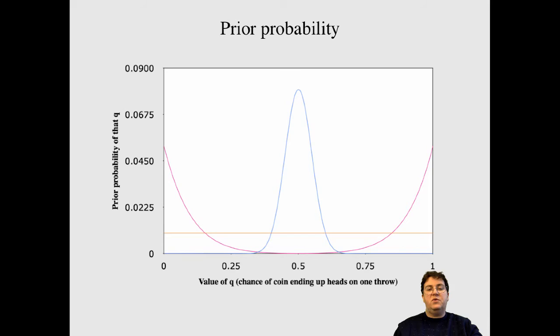I could also say, you know, I know something about coins and stats examples, they're never fair. So, let me have this weird prior, where I say, whatever the coin is, it just can't be a fair coin. It's going to be a very biased coin. That's that pink prior.